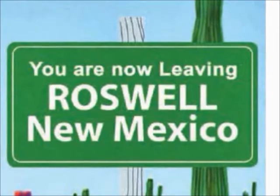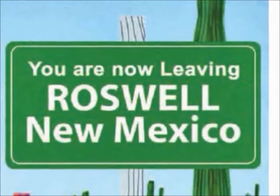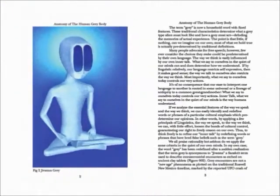The term 'gray' is now a household word with fixed features. The traditional characteristics determine what a gray-type alien must look like and how a gray must act, diluting memories of actual experience. The point is that little if anything can we imagine on our own — most of what we hold true is actually predetermined by traditional definitions.